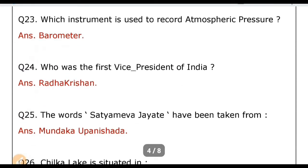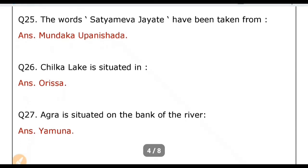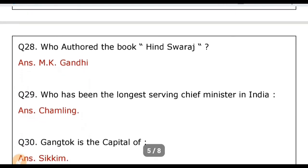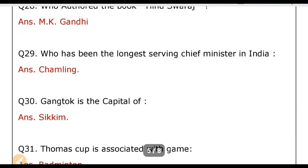Who was the first Vice President of India? Answer: Radhakrishnan. The words 'Satyamev Jayate' have been taken from? Answer: Mundaka Upanishad. Chilika Lake is situated in? Answer: Odisha. Agra is situated on the bank of which river? Answer: Yamuna. Who authored the book 'Hind Swaraj'? Answer: M.K. Gandhi. Who has been the longest serving Chief Minister in India? Answer: Pawan Kumar Chamling. Gangtok is the capital of? Answer: Sikkim.